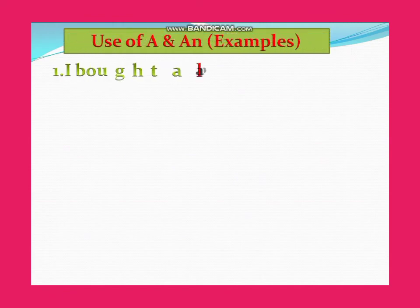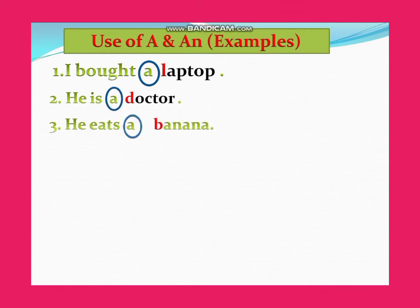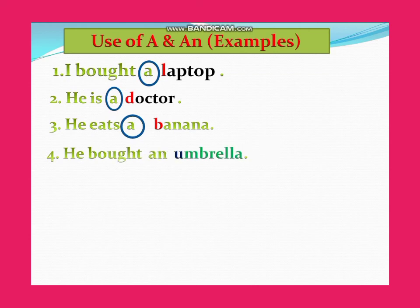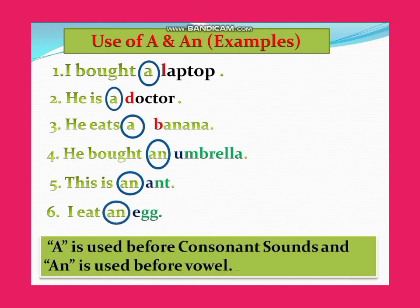More examples of the use of 'a' and 'an': I bought a laptop. He is a doctor. He eats a banana. He bought an umbrella. This is an ant. I eat an egg. As you can see, 'a' is used before a consonant sound and 'an' is used before a vowel sound.